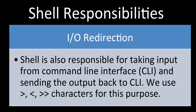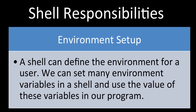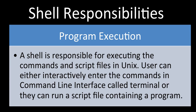Then comes IO redirection. The shell is responsible for taking input from the command line interface. As a user, you pass information to the shell, and the shell sends back the output to the CLI after running those commands. We use characters like greater-than, less-than, and double greater-than for this purpose. So these are the five main shell responsibilities: IO redirection, pipeline, interpreter, environment setup, and program execution.